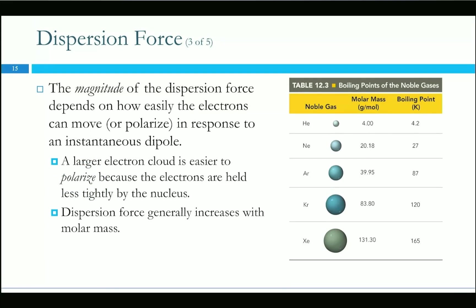One thing we'll do a lot is compare boiling points as a proxy for intermolecular forces. To boil or melt something, you have to overcome intermolecular forces. The stronger those forces, the more energy you need to overcome them. Xenon has the strongest dispersion force among the noble gases, so it takes the most energy to turn xenon into a gas — measured by its higher boiling point.